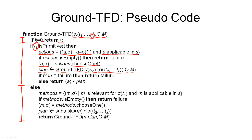This procedure may return failure, in which case we pass the failure back up because this branch in our search does not give us a solution. Otherwise, the returned plan is part of our solution, but the action we just chose must be added to the plan — and it must be added at the beginning of the plan.